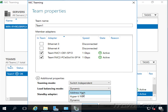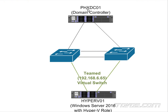Now let's look at the load balancing mode. We've got address hash and Hyper-V port - these are the two older modes. With address hash, it decides which NIC to send traffic out of based on factors like MAC address and IP address of the destination. If I'm talking to PHXDC01 the traffic might go out one NIC; if there's another server the hash will be different because it's a different MAC and IP address, so it might send traffic out on the other NIC - that's how we get the load balancing.